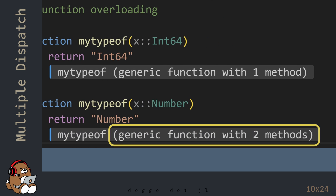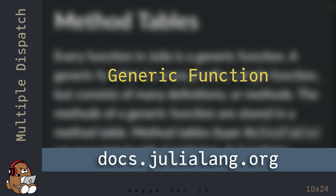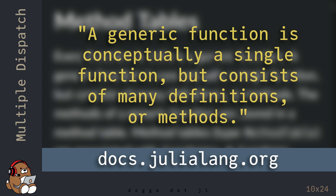Note that this is now a generic function with two methods. In Julia, every function is referred to as a generic function. According to the Julia documentation, a generic function is conceptually a single function but consists of many definitions or methods.